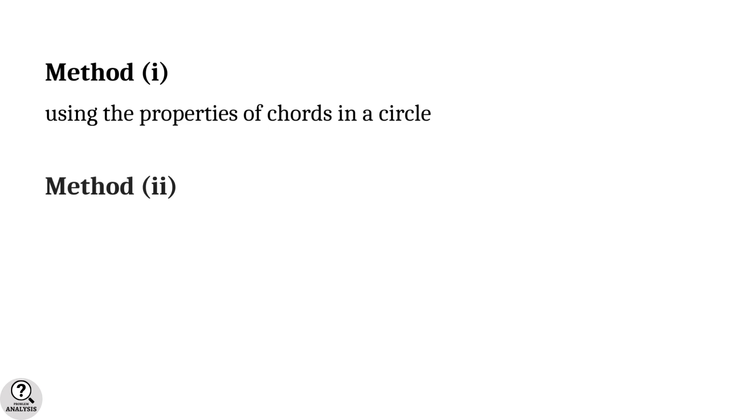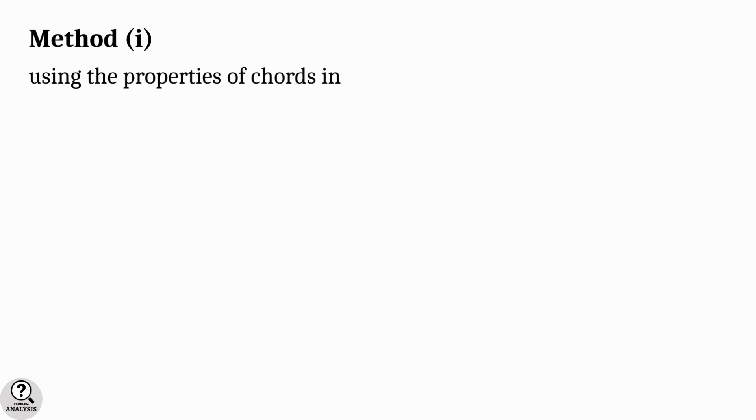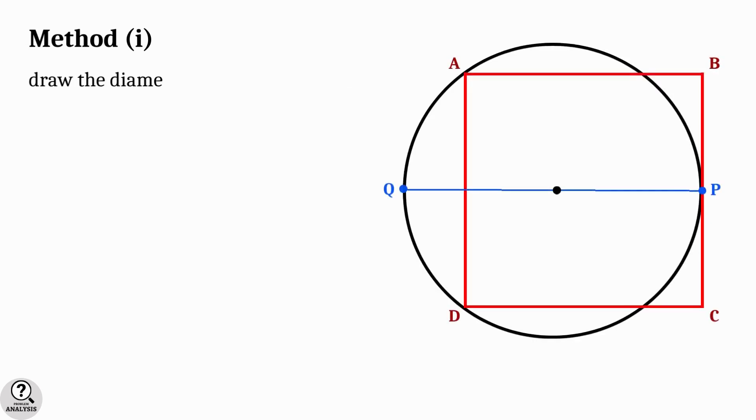Method 1: using the properties of chords in a circle. Draw the diameter PQ. Due to the symmetry of this figure with respect to this diameter, it bisects the chord AD at the point R. Therefore AR and DR are equal.